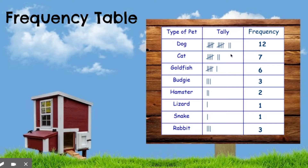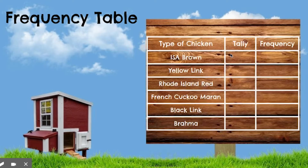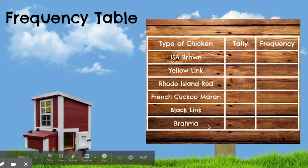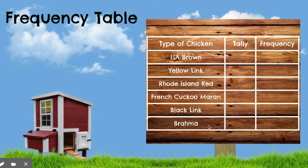So let's go ahead and create one with my chickens. We'll look at the type of chickens I have. I can make a frequency table with three columns: the type of chickens, the tally, and the frequency. I want you to go ahead and create this on your paper. I have ISA brown chickens, yellow link chickens, Rhode Island red chickens, French cuckoo marin chickens, black link chickens, and Brahma chickens. Those are the types of chickens we have at our house. Pause and finish the table — I'm going to go through and show you my chickens so you can create a tally for each one.